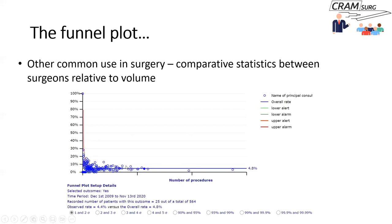Funnel plots are also used in surgery when comparing outcomes of different centres or different surgeons. Here's a classic example of a funnel plot that plots a particular complication on the y-axis versus surgeon volume on the x-axis. Each circle represents an individual surgeon, so if you know which circle represents you, you can see where you stand in relation to all other surgeons.